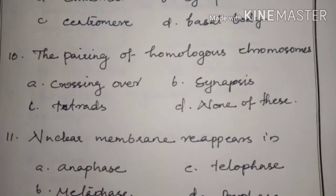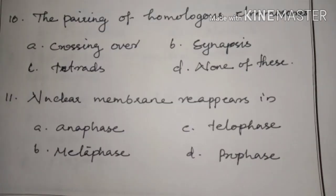The pairing of homologous chromosomes — Answer: Option B, synapsis.